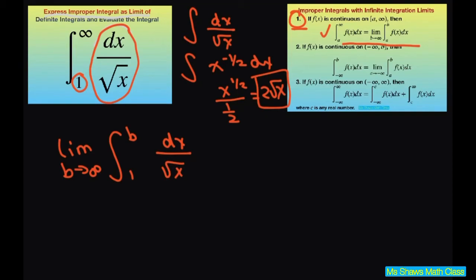Alright, so that's the first part and now we have to evaluate it. So let's go ahead and do that. We're going to get the limit as b approaches infinity. And then we're going to do the integral, which we already did. That's going to be 2 square root of x. And we're evaluating it from 1 to b.